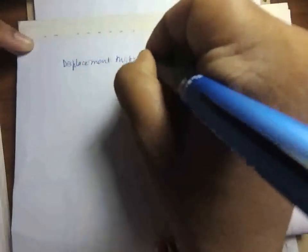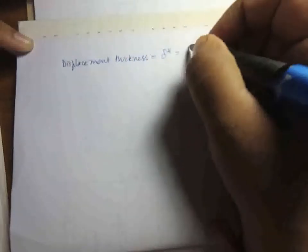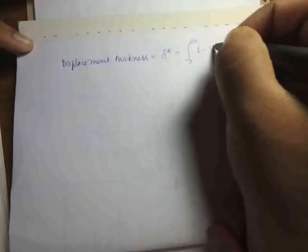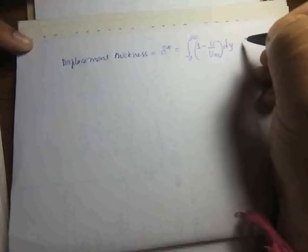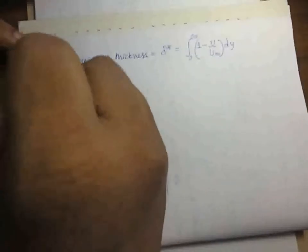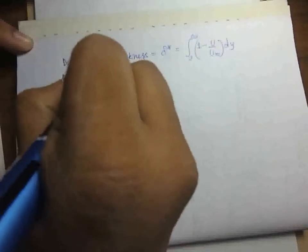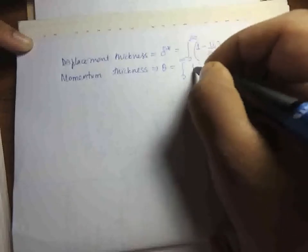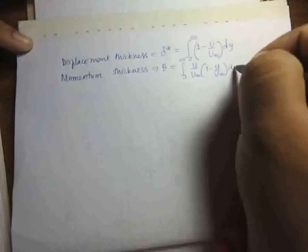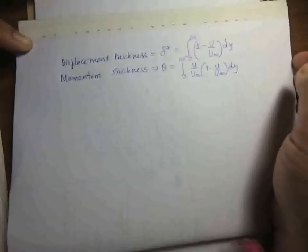We have already seen certain definitions in boundary layer theory. The important definition is that of the displacement thickness, which is defined as delta star equal to the integral from 0 to infinity of (1 minus u by u_infinity) dy, which accounts for the deficit in mass flux across the boundary layer. Similarly, the momentum thickness theta is equal to the integral from 0 to infinity of (u by u_infinity)(1 minus u by u_infinity) dy, which is the measure of the net deficit in momentum.